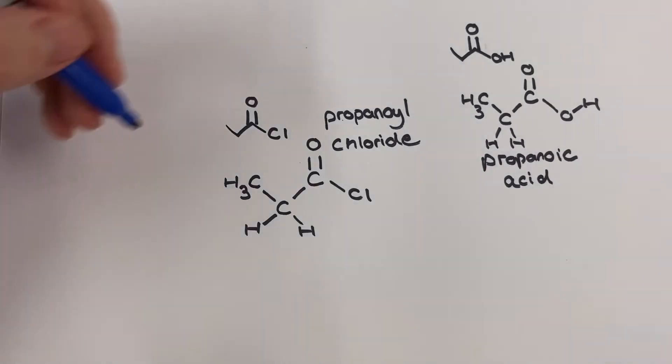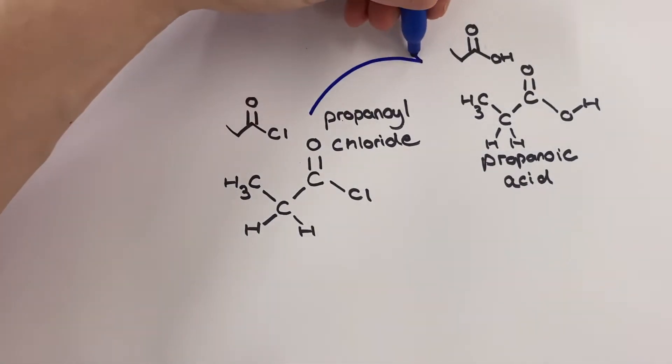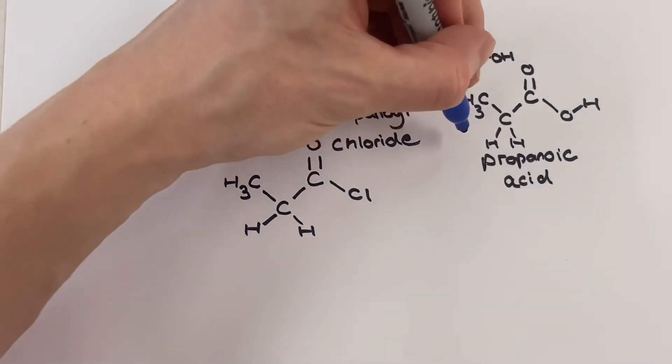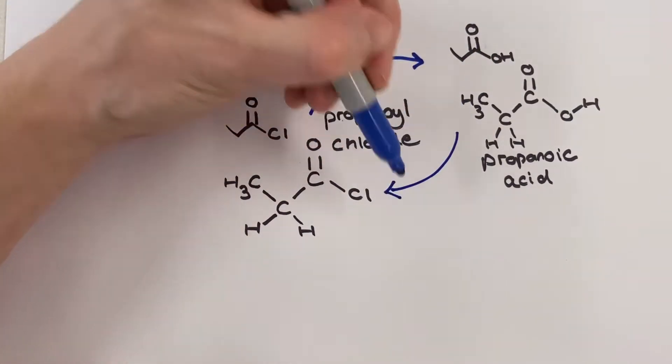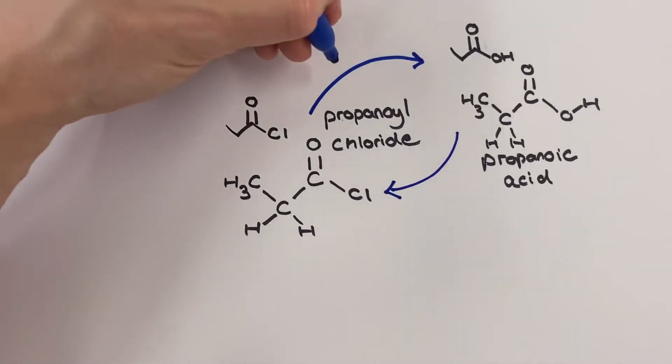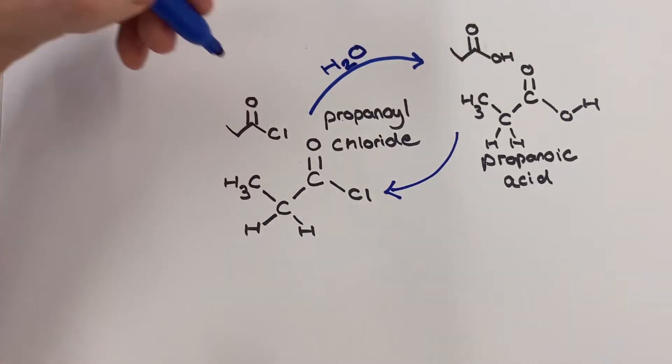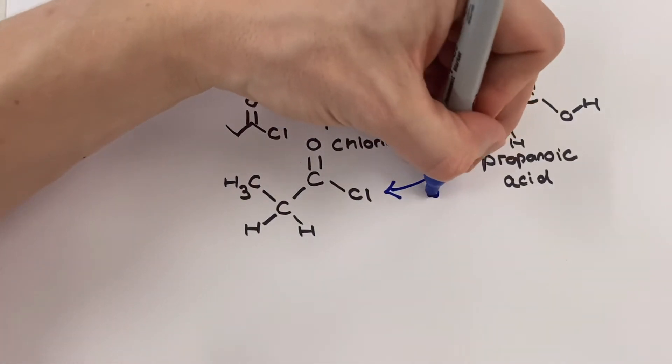We can then go back the other way using some thionyl chloride which you'll recognize with the formula SOCl2. This reaction will produce our propanoyl chloride this time along with some SO2 and some HCl. Neither of these two reactions requires a catalyst.